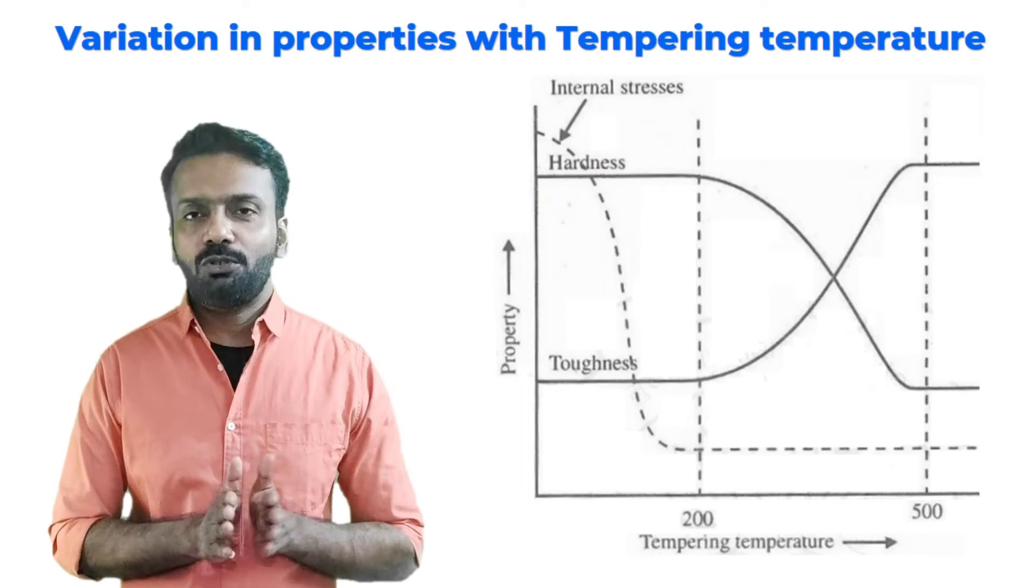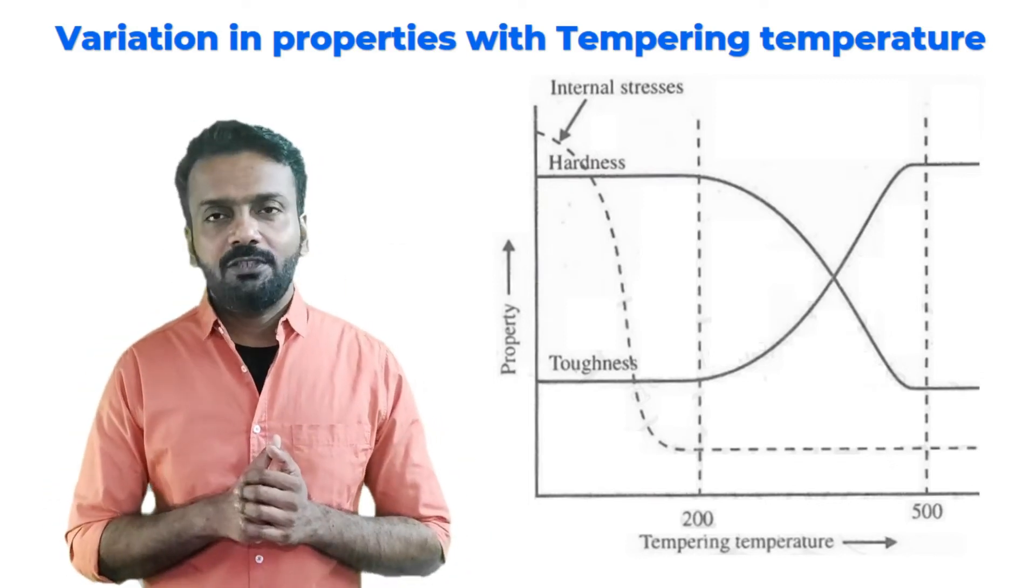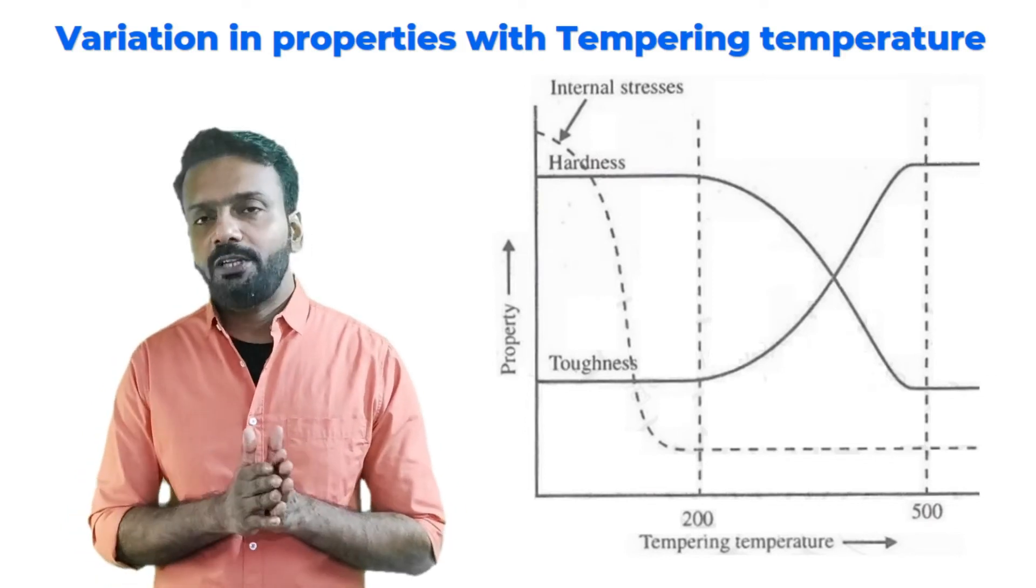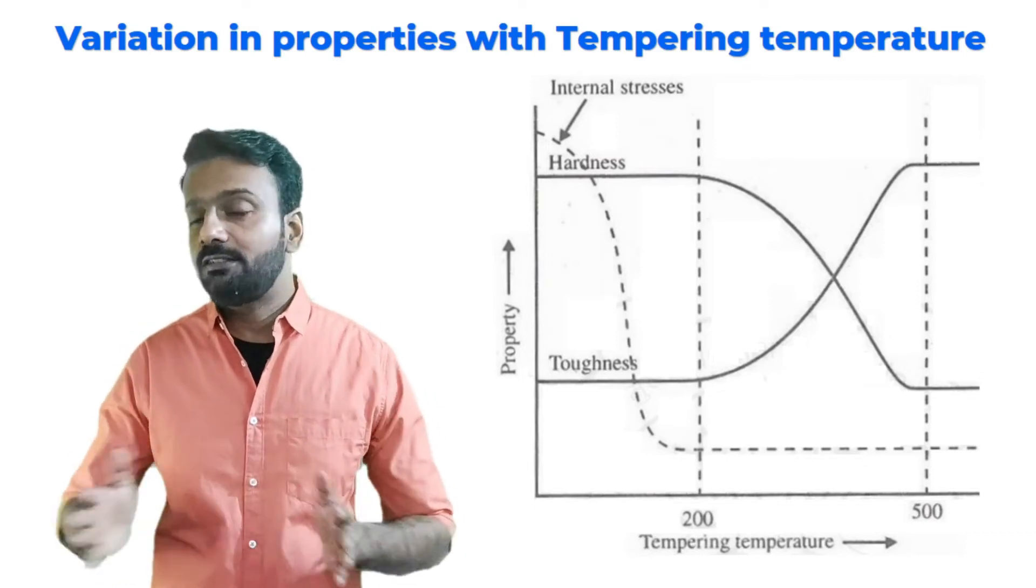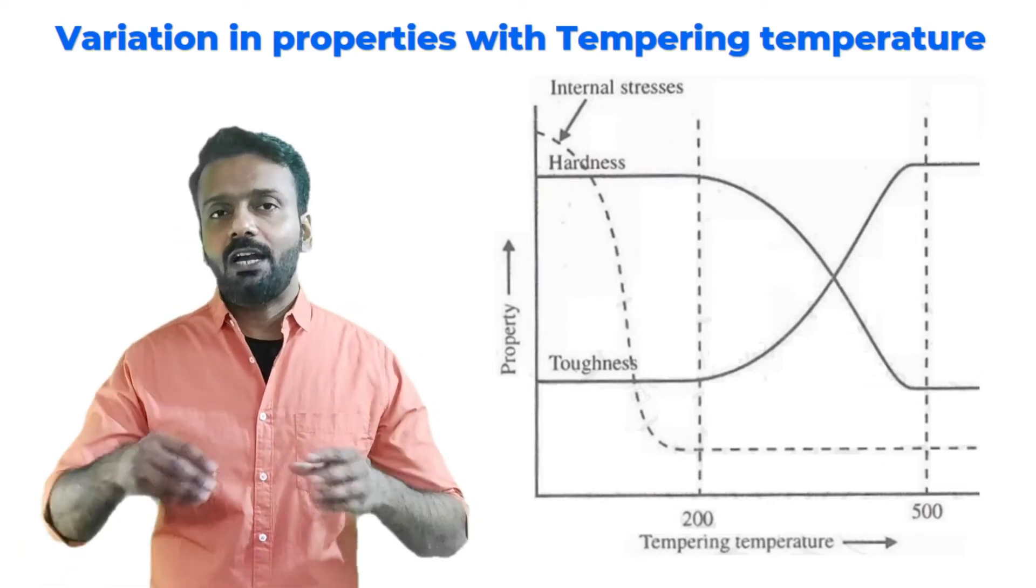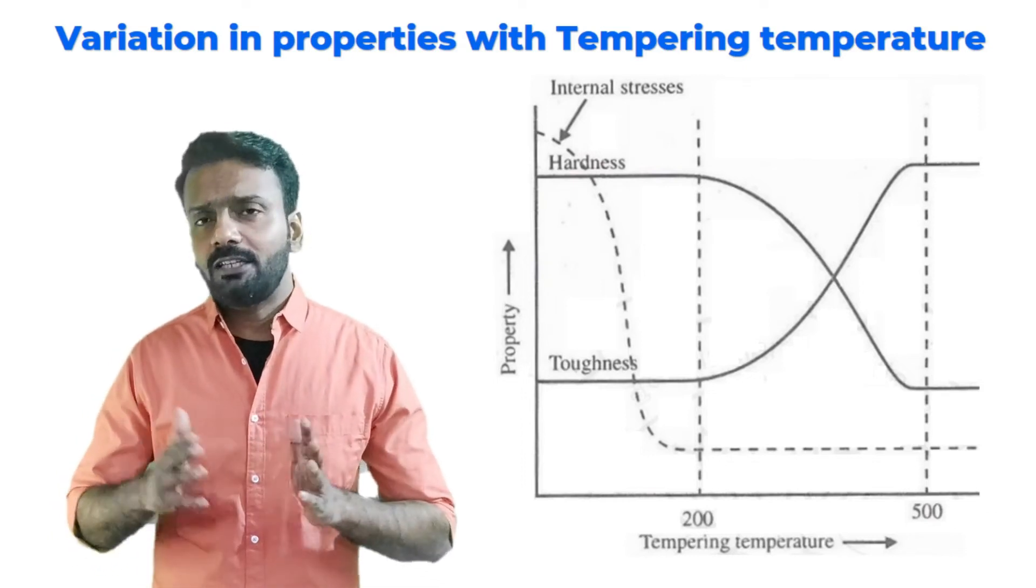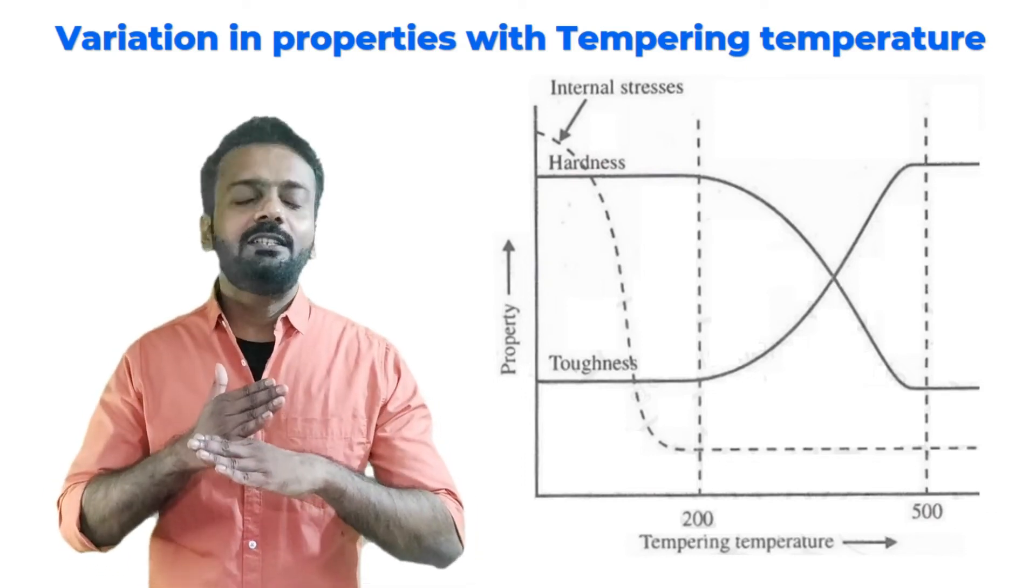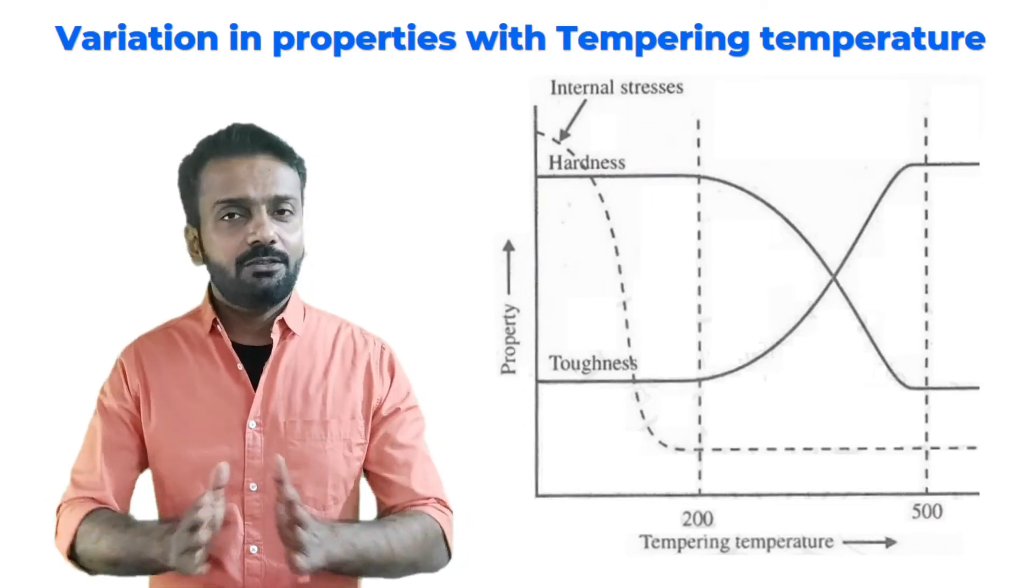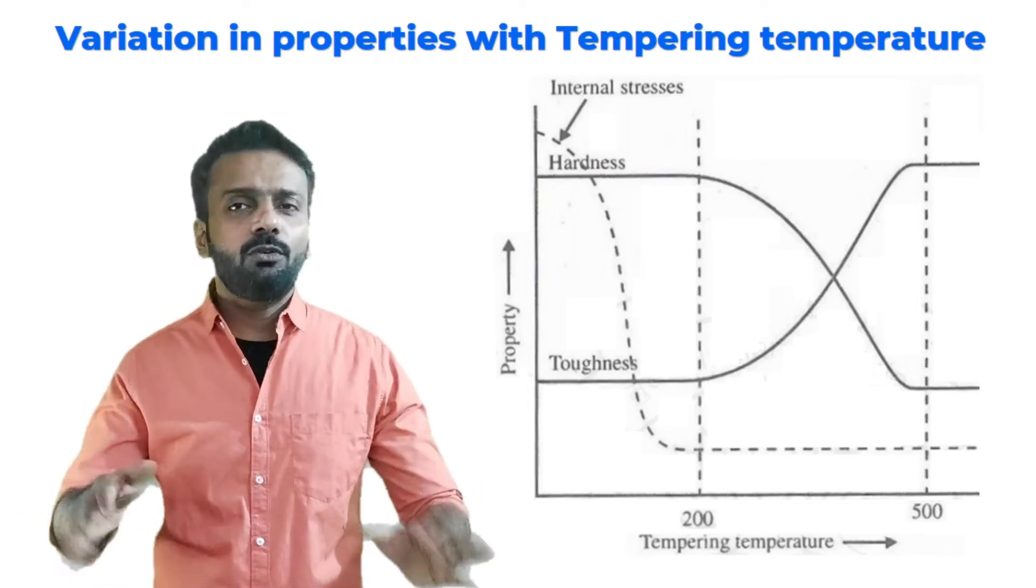Regarding variation of properties with tempering temperature: tempering temperature is on the x-axis and properties like hardness and toughness on the y-axis. When tempering, if we heat to a certain range like 200 degrees Celsius and increase temperature, hardness decreases but toughness increases. There comes a point where hardness and toughness cross each other - that is the optimum range. For optimum hardness and toughness, focus on that temperature. For very high toughness, heat beyond 500 degrees, but you compromise on hardness.